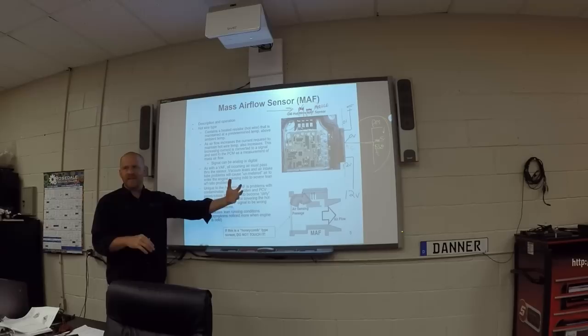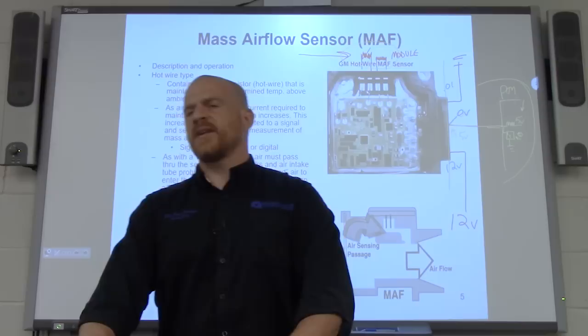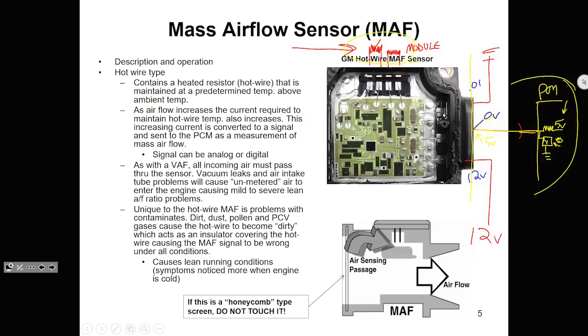So this thing gets hot — the little heated resistor gets hot, and then we dissipate that heat by airflow moving across it. Current flow is what is changing, so an increase in current flow would be an increase in the signal. The computer sees that increase in signal and adds more fuel. So this is a huge player in our fuel system.